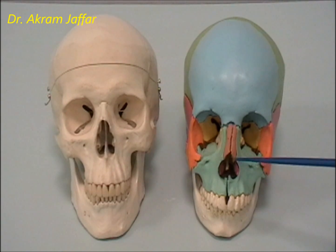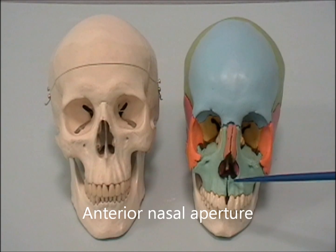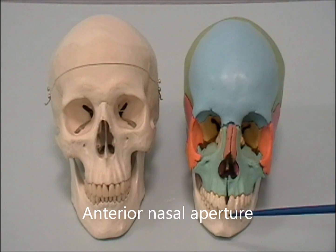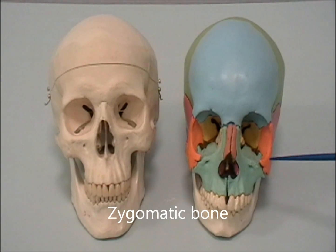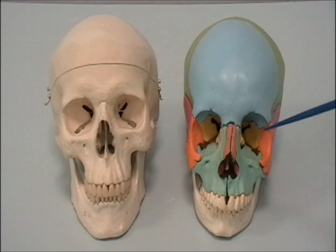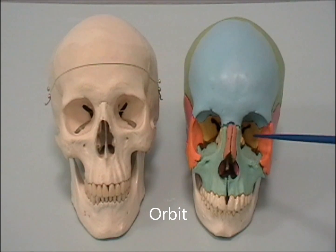The nasal bones and the maxilla form a boundary of the anterior nasal aperture, and the other bone here is the mandible. Another bone that participates in the formation of the face is the zygomatic bone, and of course we can see the two orbits here. The orbit is the socket for the eyeball, and it is called the orbit because the eyeball rotates within an orbit.